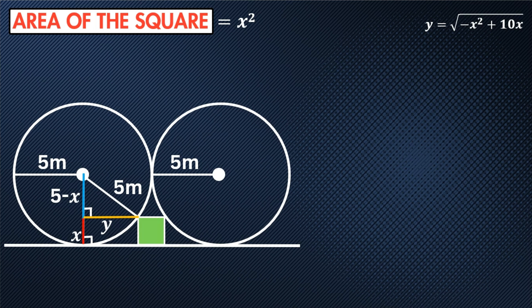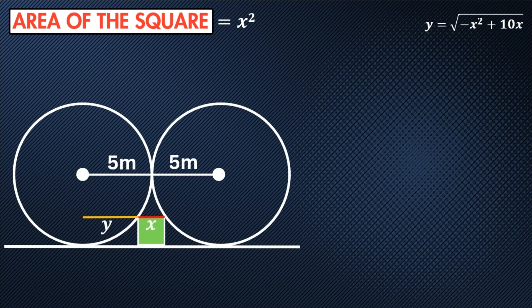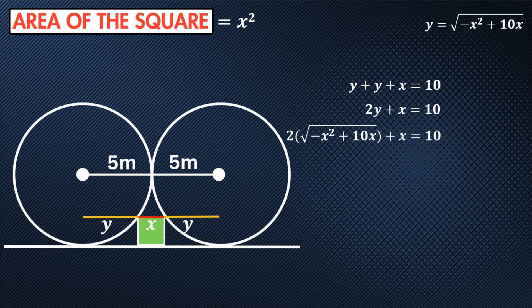Now that we have a value for y, we can set up a new equation where y plus y plus x would have a length of 10. We can simplify this to two y plus x equals 10. Now we can substitute our value for y into this equation: two times the square root of negative x squared plus 10x, plus x, equals 10.